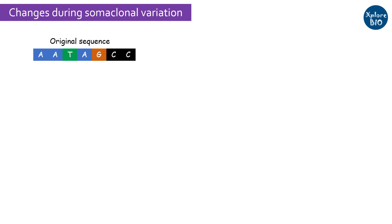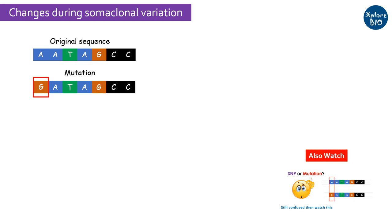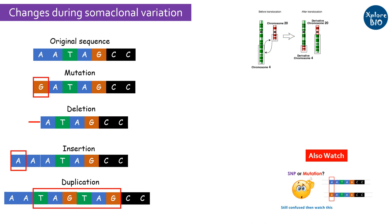During somaclonal variation, genetic alterations such as single-base changes termed as mutations, DNA translocations, deletions, insertions, or duplication of segments of DNA, activation of transposable elements, or changes in ploidy of plants resulting in loss or gain of chromosomes can be observed.